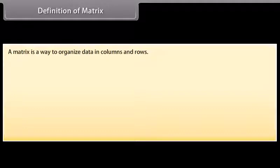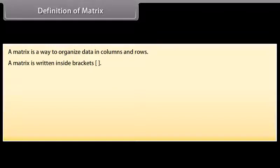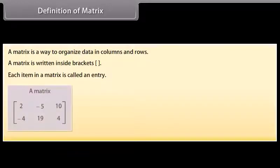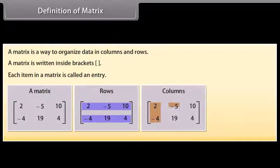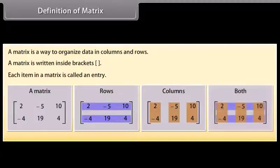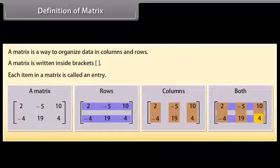Definition of matrix. A matrix is a way to organize data in columns and rows. A matrix is written inside brackets. Each item in a matrix is called an entry. Look at this matrix — it has two rows and three columns. The entries of the matrix are 2, -5, 10, -4, 19, 4.